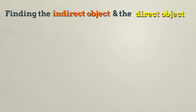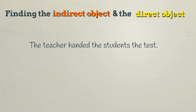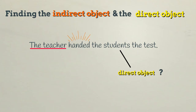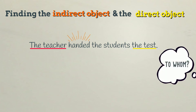Let's see if we can identify the indirect object and the direct object in the following sentences. The teacher handed the students the test. Here is the subject and verb. What's receiving the action — the students or the test? It's the test that's receiving the action. The direct object is the test. To find the indirect object, we need to work out where the direct object is going. We can ask: to whom? The tests are going to the students. The indirect object is the students.